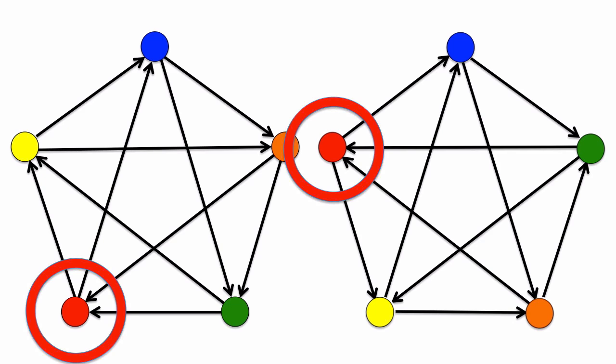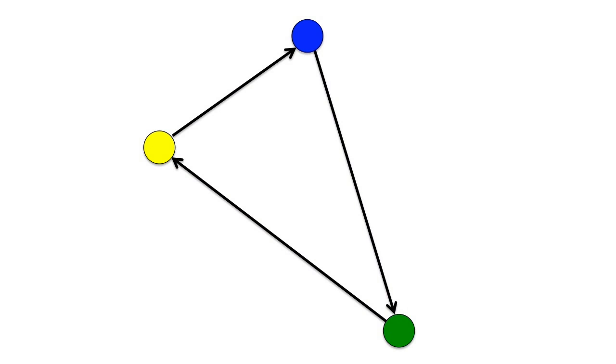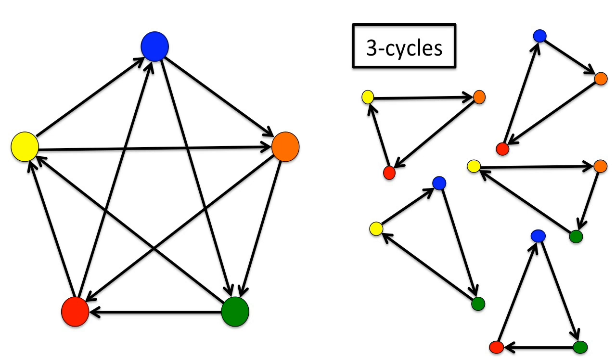For example, red points to yellow and blue and is pointed at by green and orange. Note also that we can sometimes remove two vertices to get the graph we saw for rock-paper-scissors. There are five of these three cycles within the five graph.